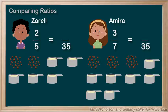What times by 5 equals 35? 7. So for 2 over 5 we need to multiply 7 on the top and 7 on the bottom. We get 14 over 35.